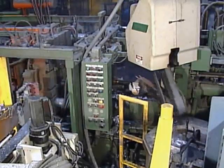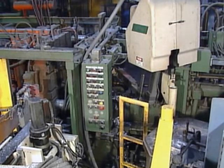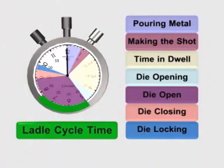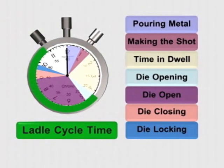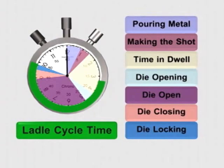If the ladle is still not making it to the machine on time, consider starting the ladle sooner. If the die open time is shorter than the ladle cycle time, it may be necessary to start the ladle soon after the shot is made.